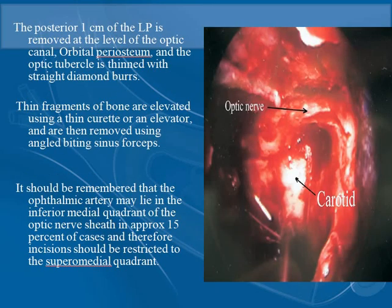The posterior one centimeter of the lamina papyracea is removed at the level of the optic canal. The orbital periosteum and the optic tubercle are thinned with a straight diamond burr. The thin fragments of bone are elevated using a thin curette or elevator and are then removed using an angled biting sinus forcep. It should be remembered that the ophthalmic artery may lie in the inferior-medial quadrant of the optic nerve sheath in approximately 15 percent of cases, and therefore the incision should be restricted to the superior-medial quadrant.